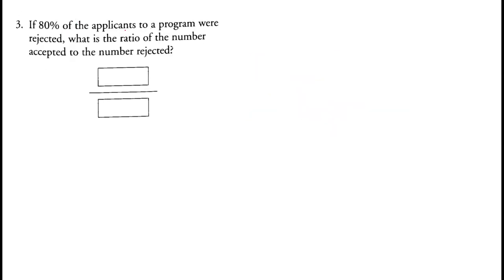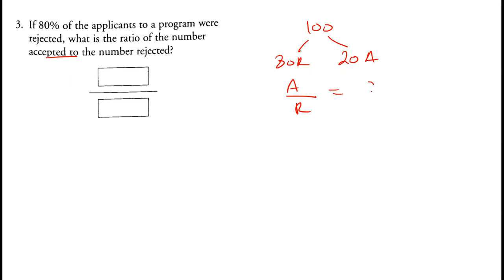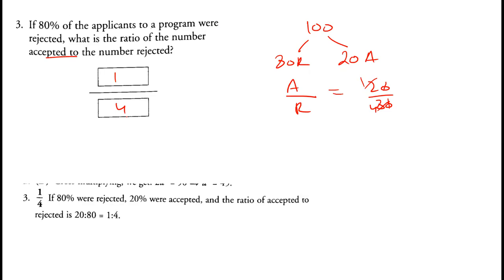Now if 80% of the applicants to a program were rejected, and if there were 100 applicants, 80 were rejected, so 20 would be accepted. What is the ratio of the numbers accepted to the numbers rejected? This would be 20 over 80, which simplifies to 1 by 4. The correct answer is one by four.